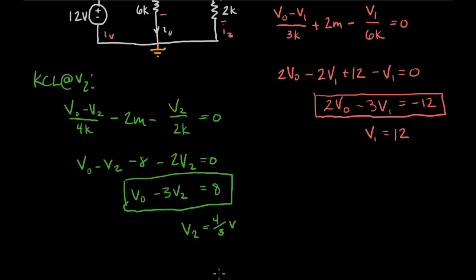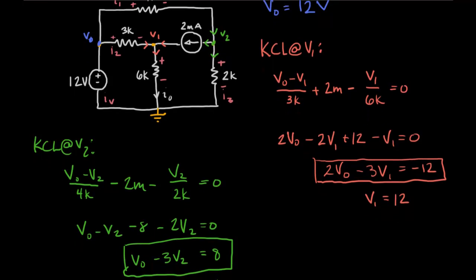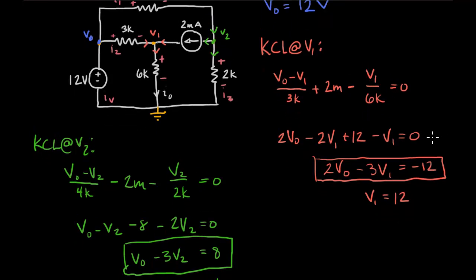And it's really a matter of simple math now to go back and solve for the branch currents. Because recognize that this right here is I2. This right here is I0. This right here is I1. And this is I3.